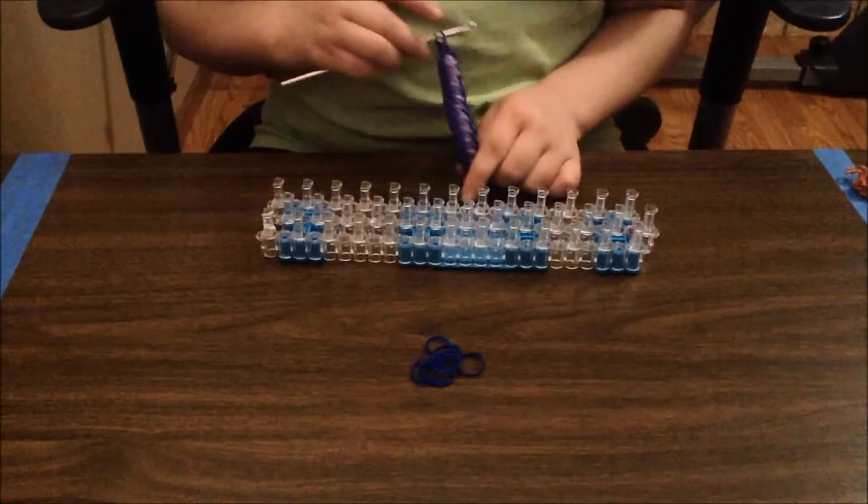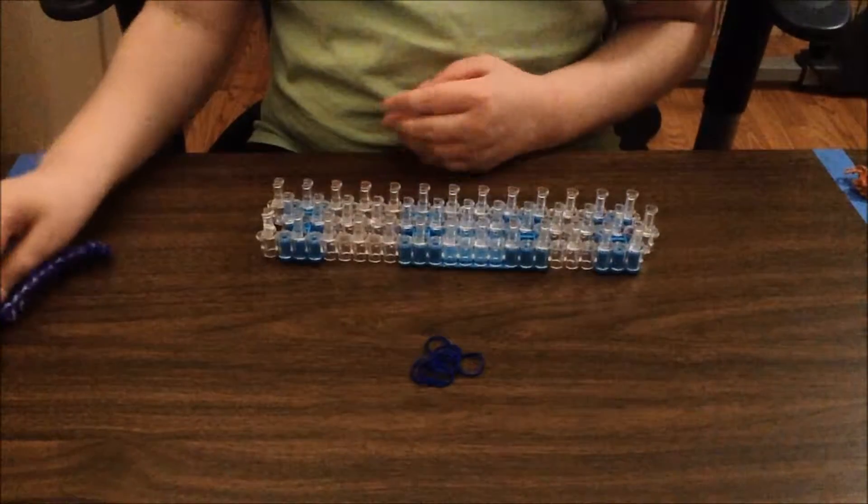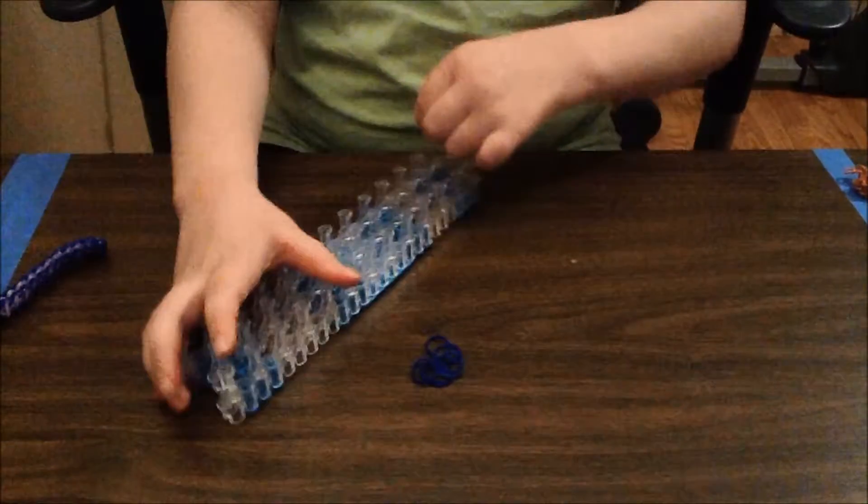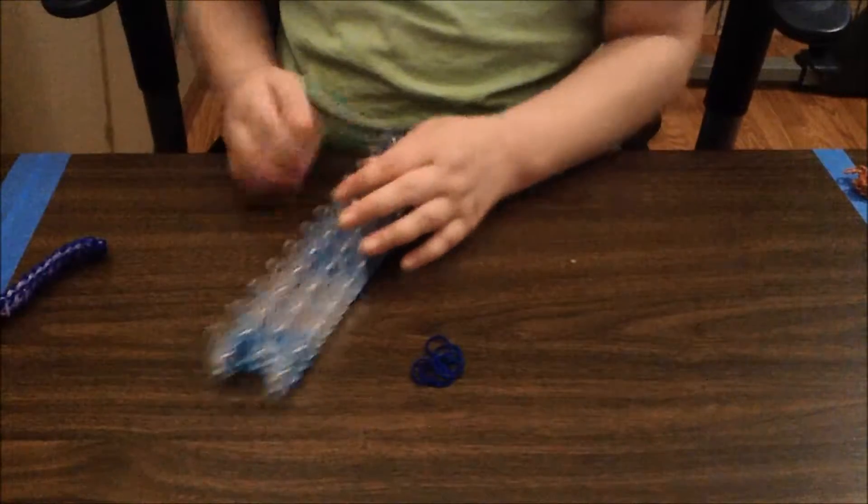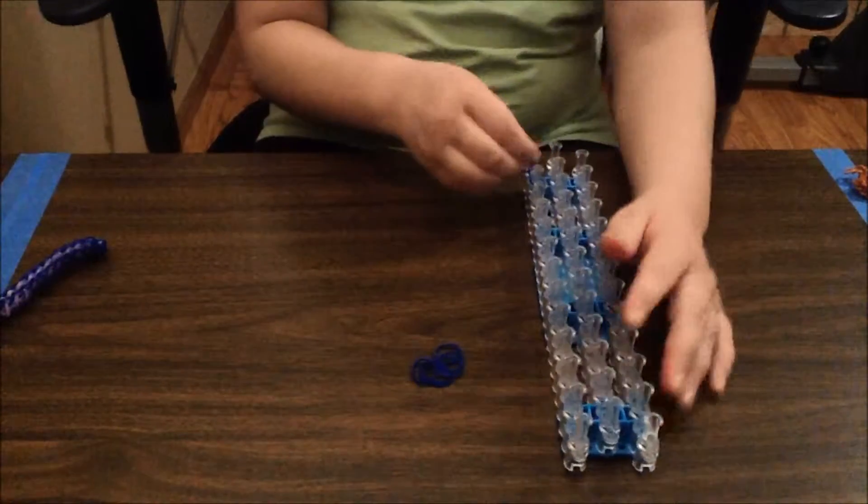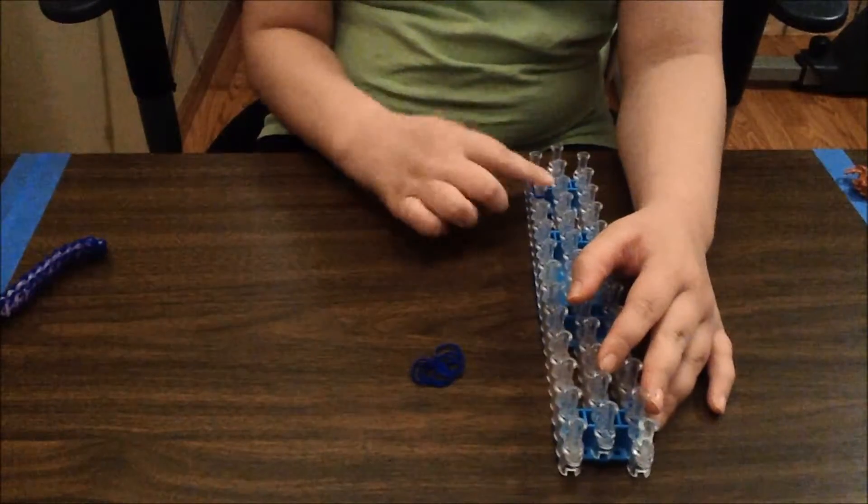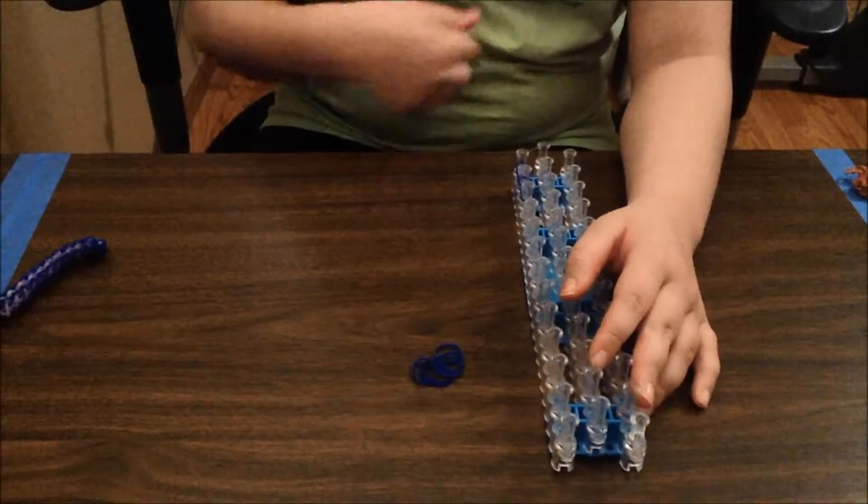Okay, so you're going to want to have this on your hook. And then set that aside and place eight bands on the loom with the arrows pointing away from you. And if you don't have an arrow, the back of the pins are facing towards you.